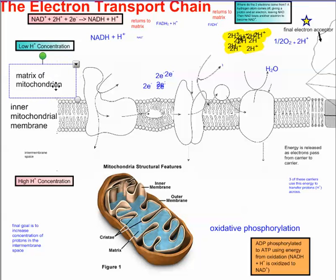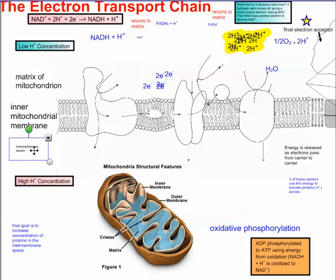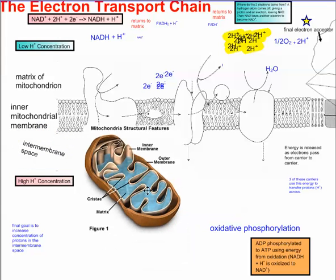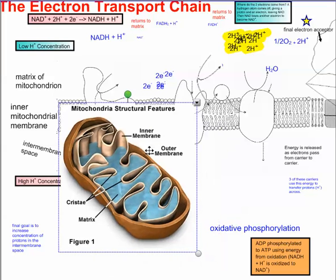This top part above this is called the matrix, and the matrix is the blue stuff that's in here. And then down underneath is the intermembrane space. This is very, very important. This intermembrane space over here is the space that is actually between the inner membrane and the outer membrane.